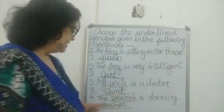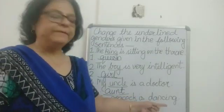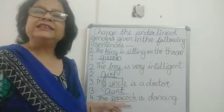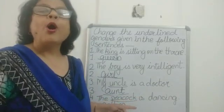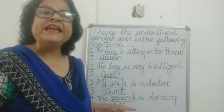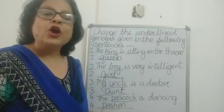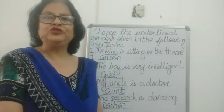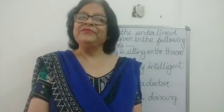The last sentence: The peacock is dancing. The word peacock is underlined, and we have to write the opposite gender of peacock, which is peahen. The opposite gender of peacock is peahen. So now children, I believe you must have understood what genders are all about. They are a type of noun — male and female. It should be very clear to you by now. Thank you.